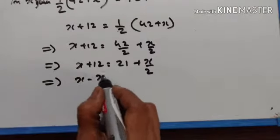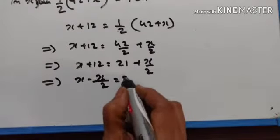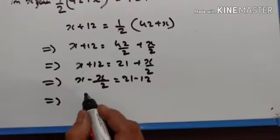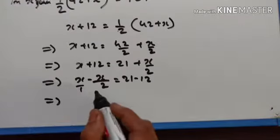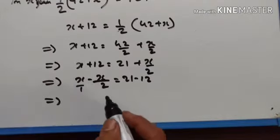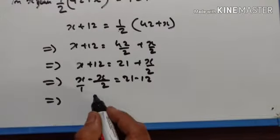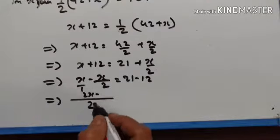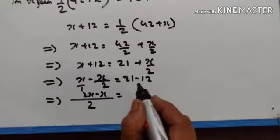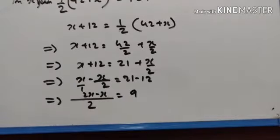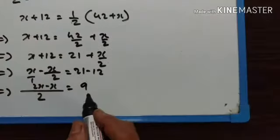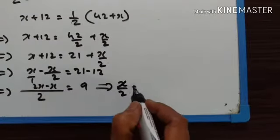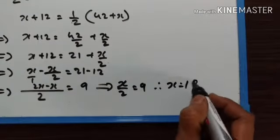x minus x over 2 is equal to 21 minus 12. Taking the LCM of 2: 2x minus x over 2 is equal to 9. So x over 2 is equal to 9, therefore x is equal to 18.